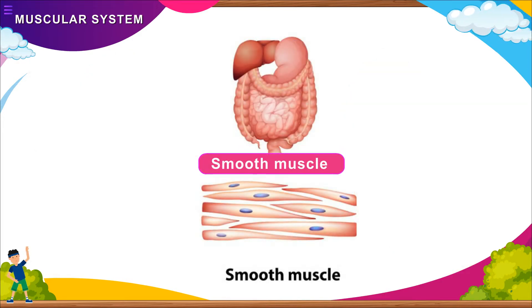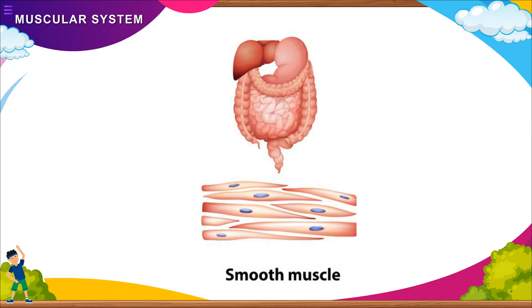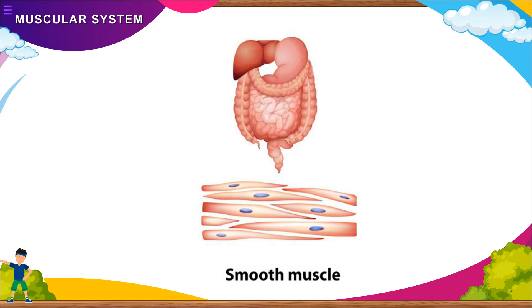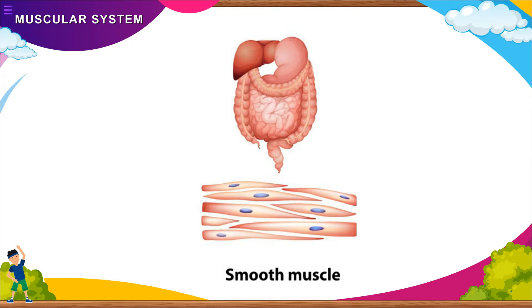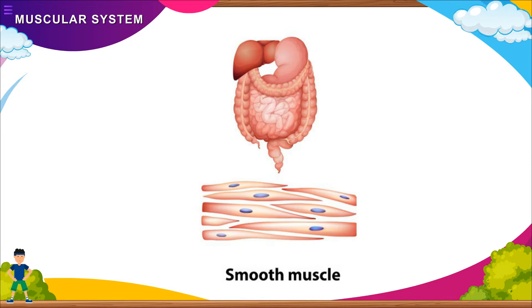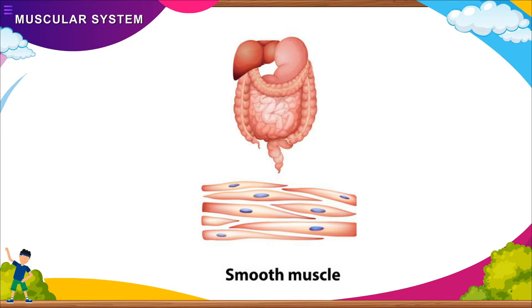Smooth Muscles. Even when we sit still, some muscles in our body automatically work. These muscles are called smooth muscles or involuntary muscles. The muscles involved in breathing,